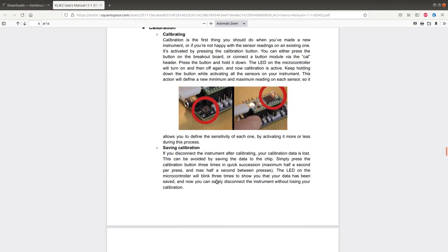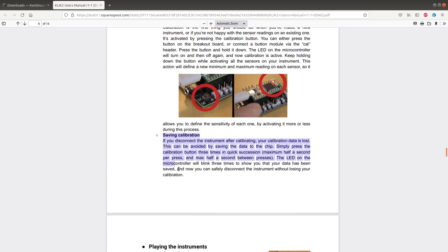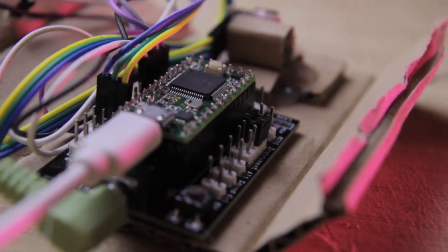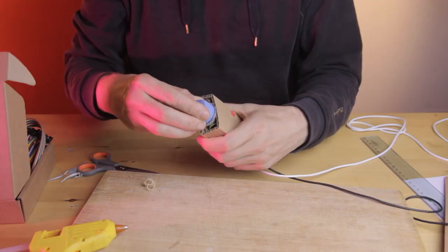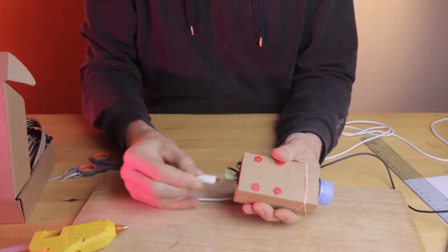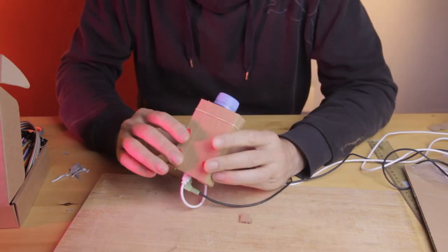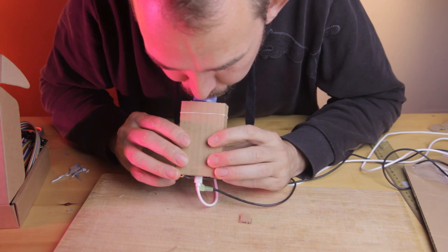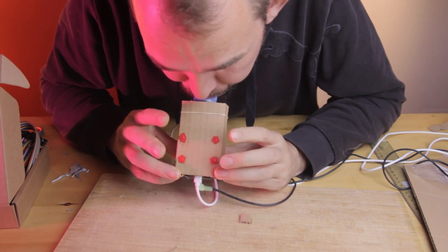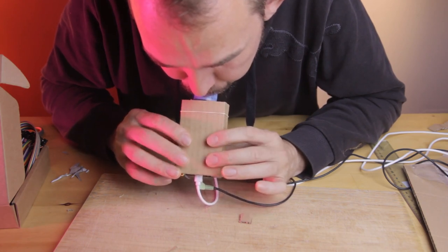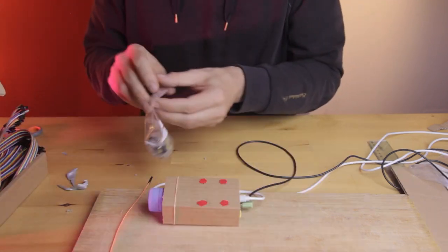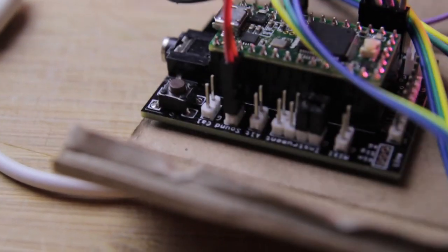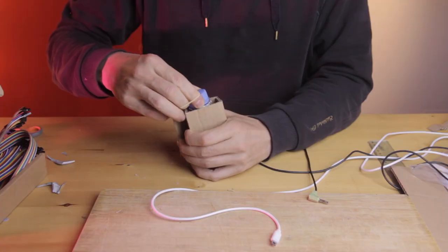Let's save the calibration so that we don't have to do it again after we reset. Just press the button three times, wait for the LED to blink three times and it's done. Now we can unplug, re-plug and start playing. We are back in audio mode now, so if we plug a button module into the sound header right here, we'll be able to cycle through the different samples like this.